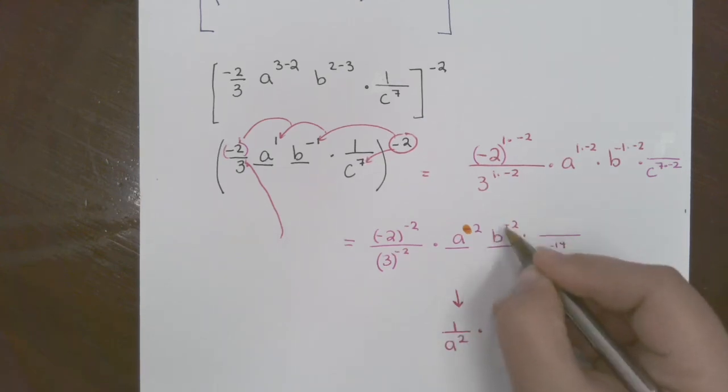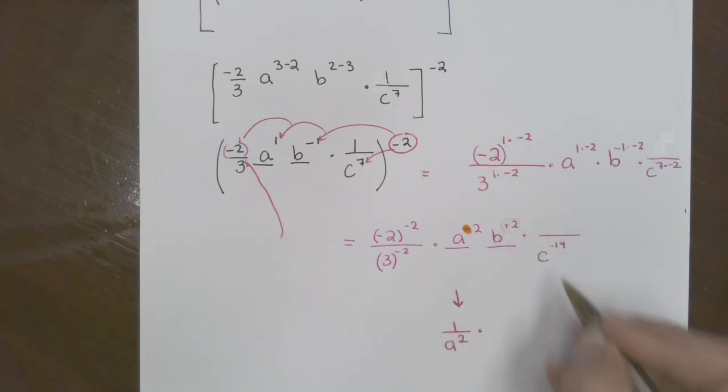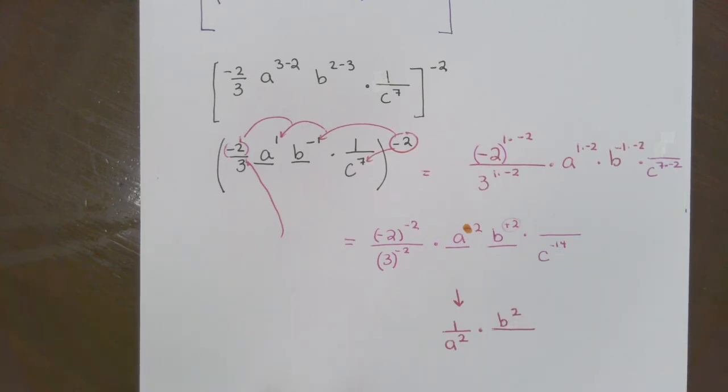Then we've got that b squared. Do we have a negative on that two right here? No. So we keep it, so it's going to stay on top. But now we have that c negative 14. We've got to flip it, absolutely. So when you see a negative on an exponent, we've got to flip it. So that c to the 14th is now belonging on top.